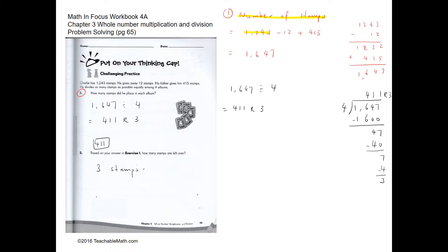1243 subtract 12 and add 415, so he will have 1647. Now we're going to divide 1647 into four equal parts. When we do the division we will have 411 remainder 3.